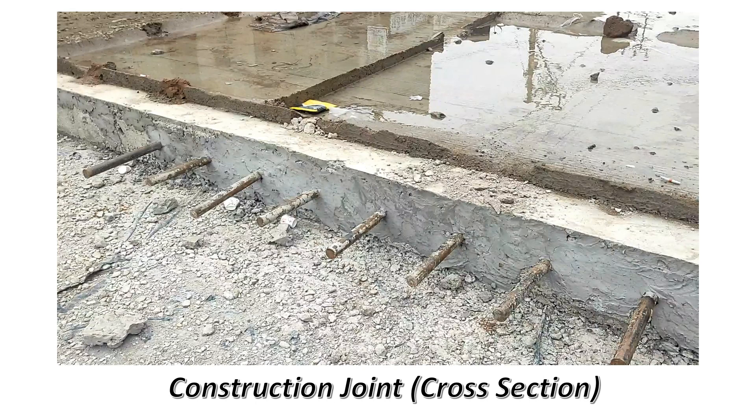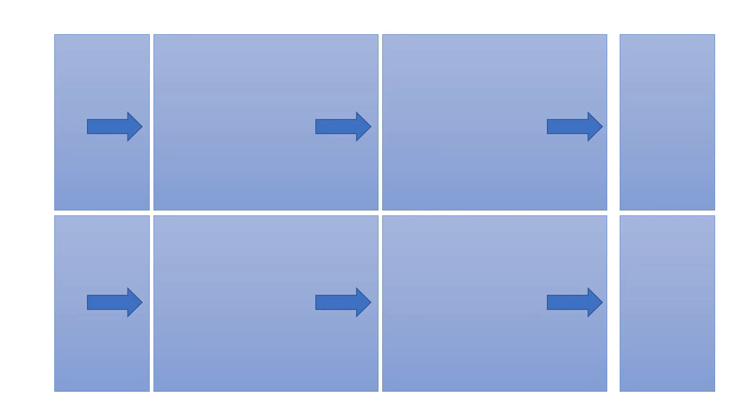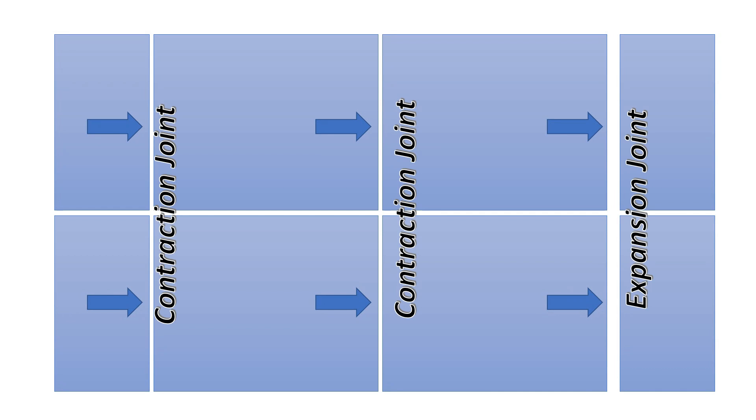In this figure, the left two are contraction joints in the middle of the bay, and on the right hand side at the end of the bay there is expansion joint. The dowel bars are provided in this manner for the particular joint.